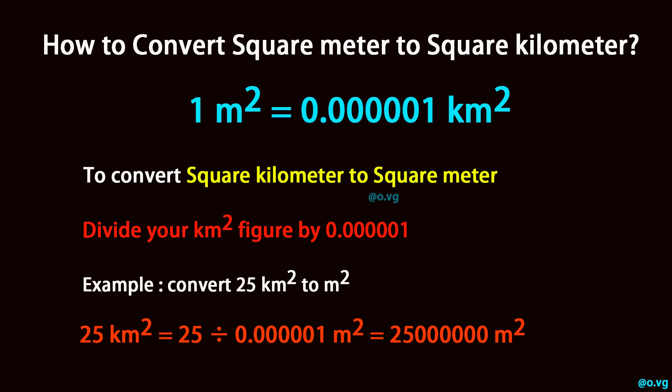Example: convert 25 square kilometer to square meter. 25 square kilometer equals 25 divided by 0.0000001 square meter, which equals 25 million square meter.